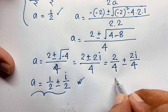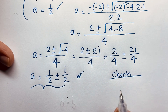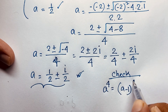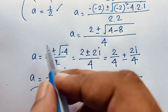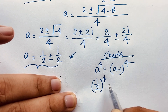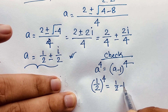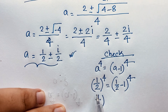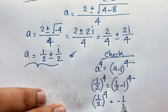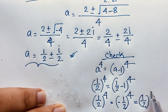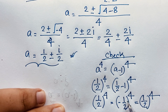Now let's verify our real solution. Our original question is a to the power 4 equals a minus 1, whole to the power 4. With a equal to one half, it becomes 1 over 2 to the power 4 equals 1 over 2 minus 1 to the power 4, which is minus 1 over 2 to the power 4. Since the power is an even number it is always positive, so we get 1 over 16 equals 1 over 16. Left hand side and right hand side are both equal.